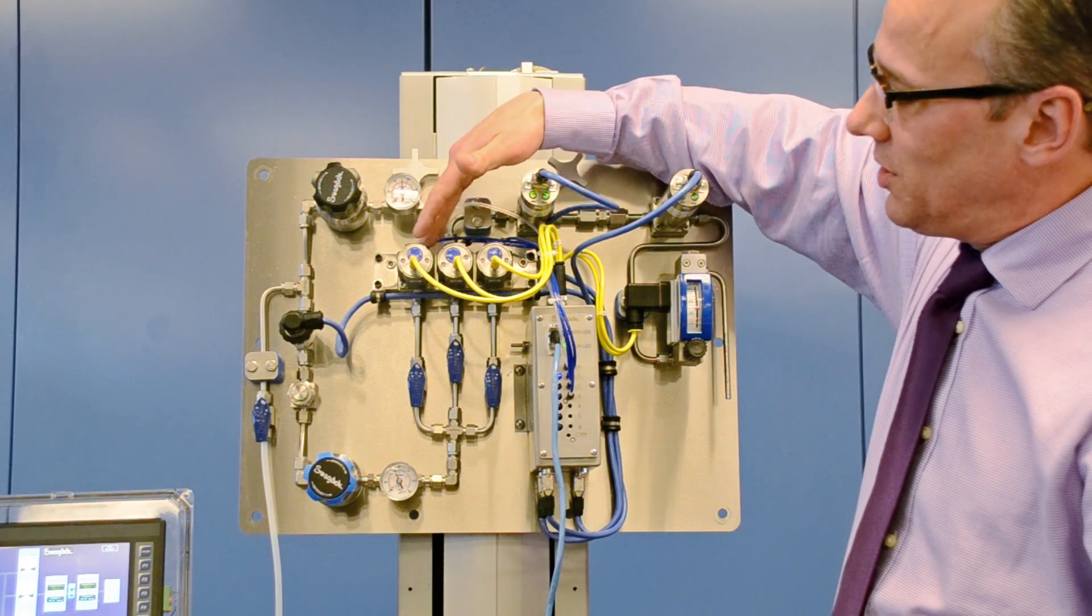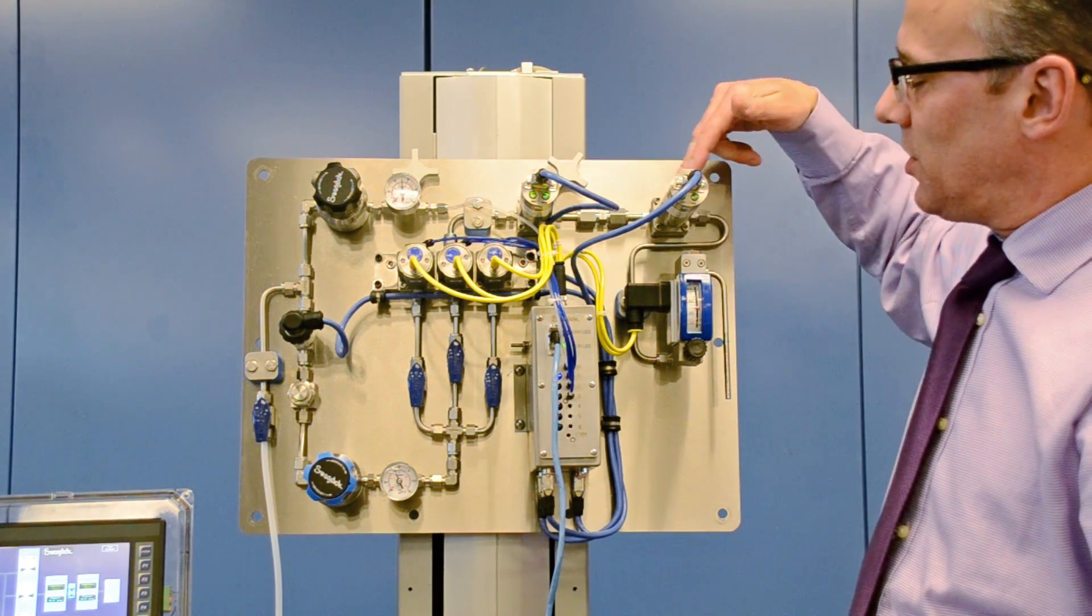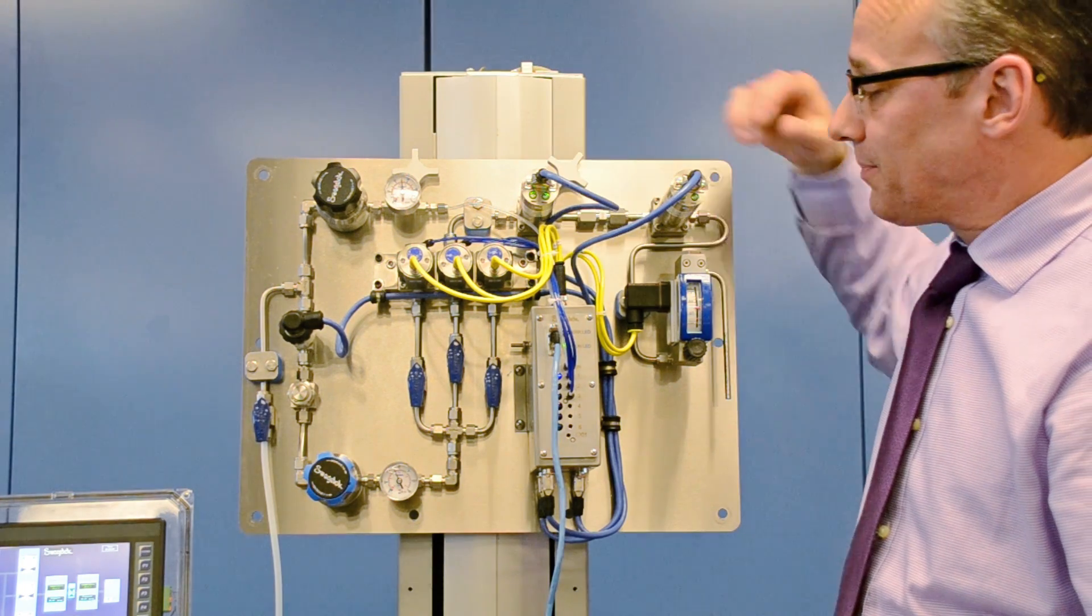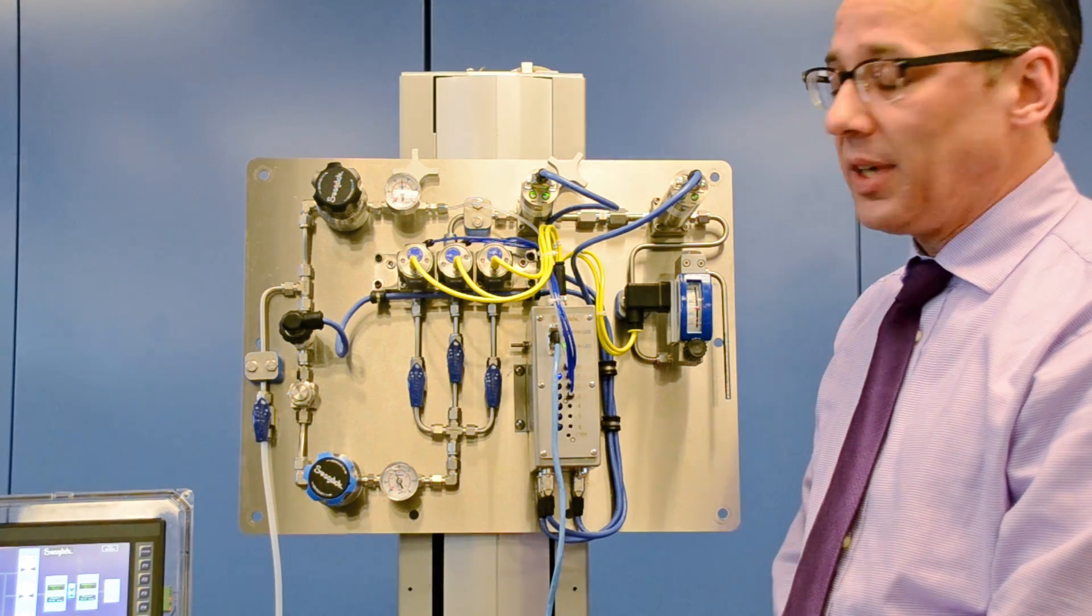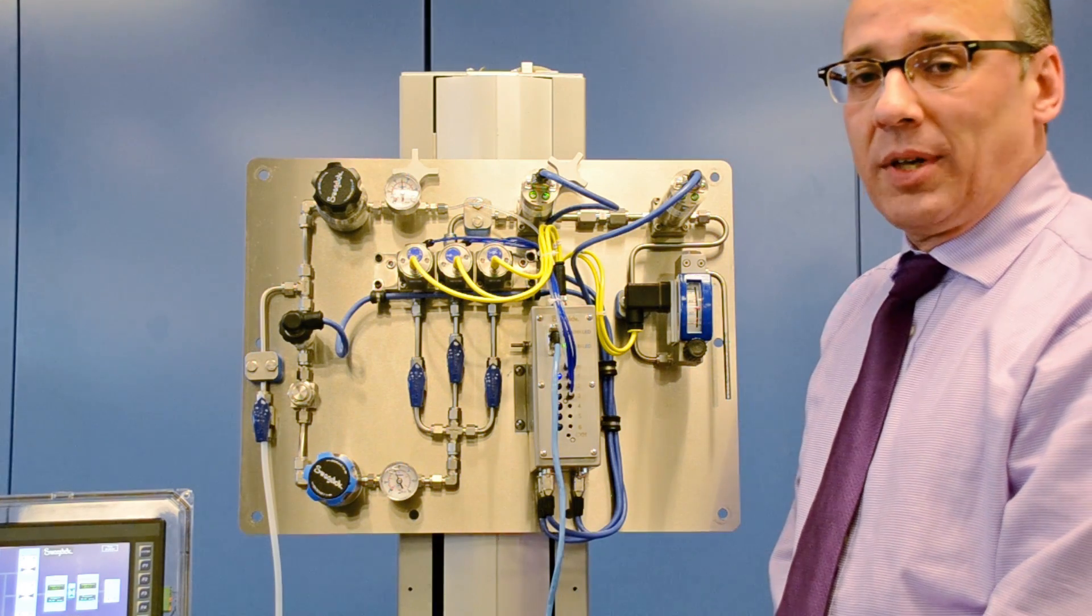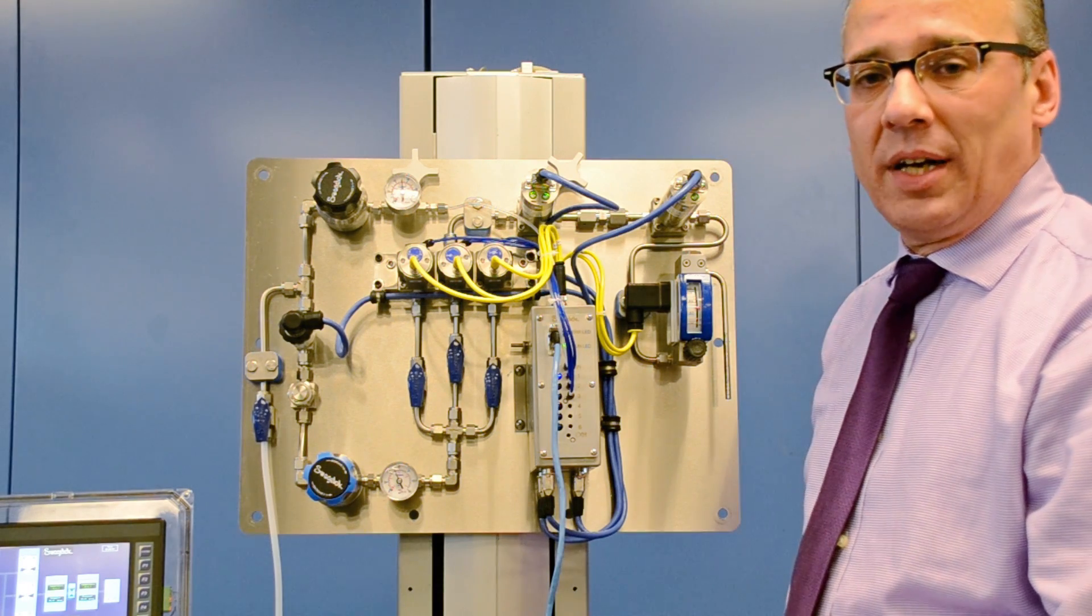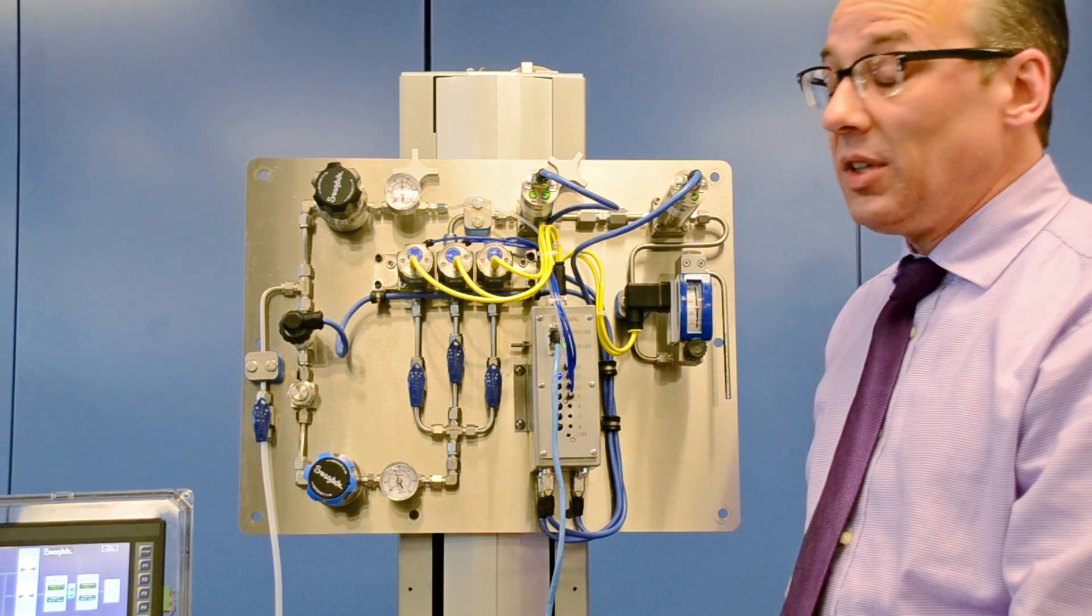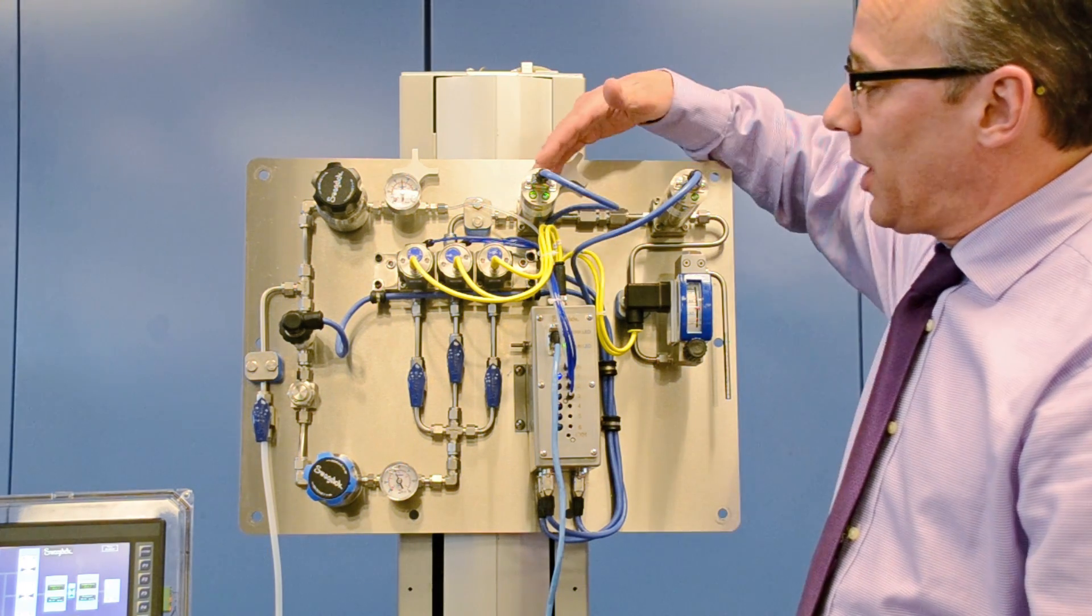Now as these valves are opened and closed, the process stream flows through these products here. And these are two new products from Swagelok, or actually two of the same product. We call them our pressure and temperature transducers or PTXs. And as their name implies, they measure pressure and temperature. These products are suitable for use with a wide variety of automation equipment, PLCs or any type of DCS that can monitor a voltage output.